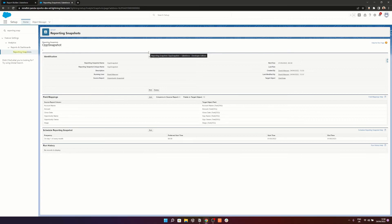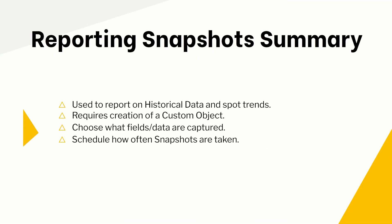So that covers reporting snapshots. As you can see, we've walked through each and every step in how to set them up. To do a final summary: reporting snapshots are used to report on historical data and to spot trends. They require a couple of steps including the creation of a custom object. You need to choose what fields and data are captured and store them in that custom object, and then you can schedule how often snapshots are taken. In the resources I'm going to put a couple of links to reporting snapshots because there are a few considerations you need to be aware of when you set them up.